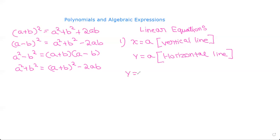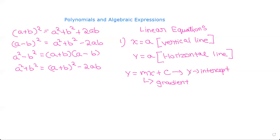Now let's look at the equation y equals mx plus c — this is the equation of a straight line. m is the gradient and c is the y-intercept. The y-intercept is where the line crosses the y-axis. Whenever a straight line goes upward the gradient is positive, and whenever it goes the other way the gradient is negative.